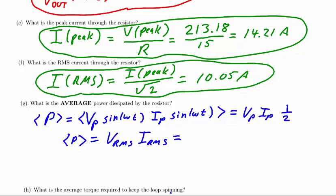Plugging in the values that apply to this problem we will find that the average power dissipated by the resistor is 1514.9 watts.